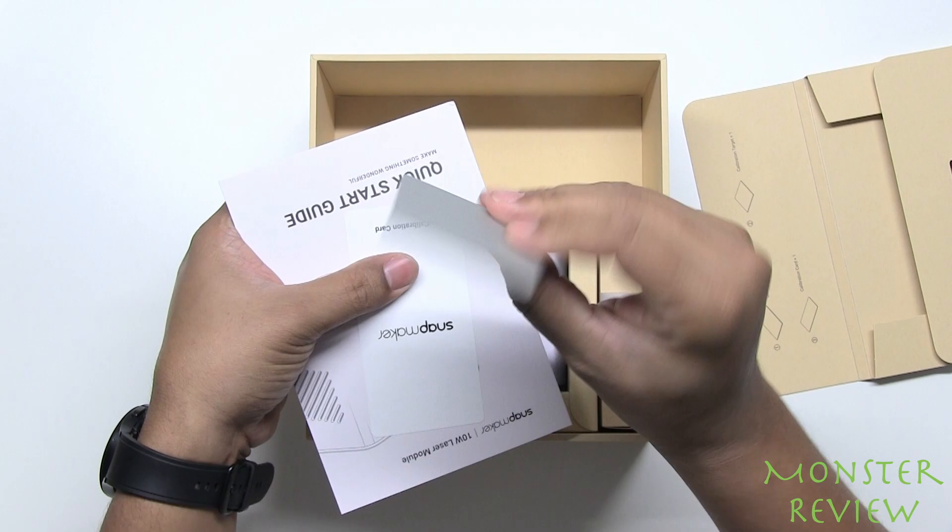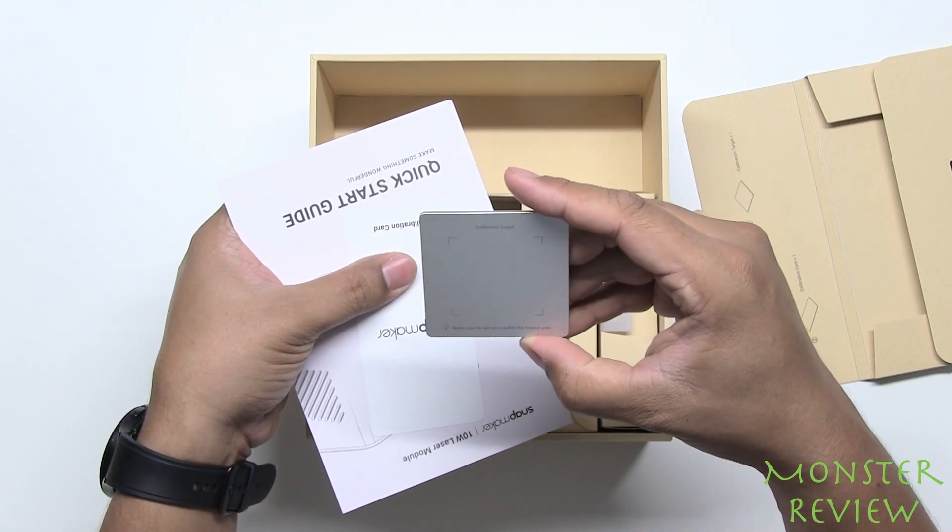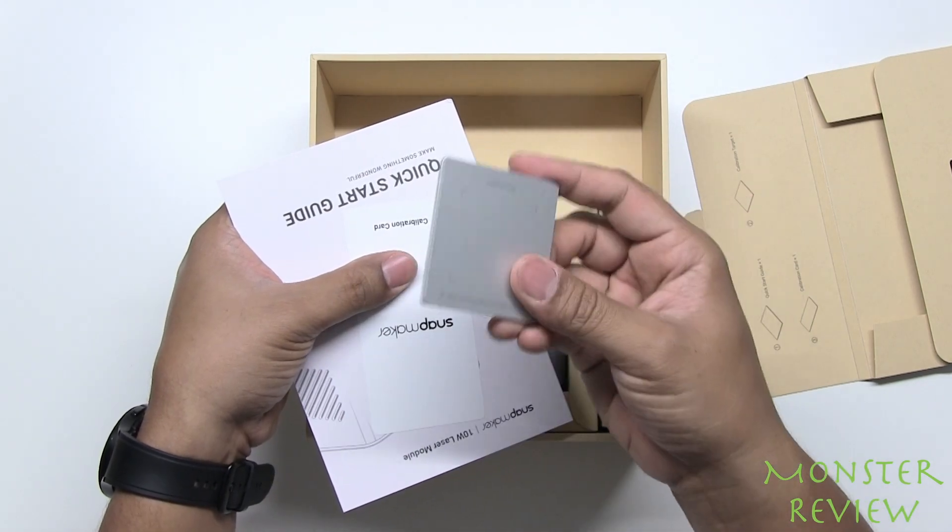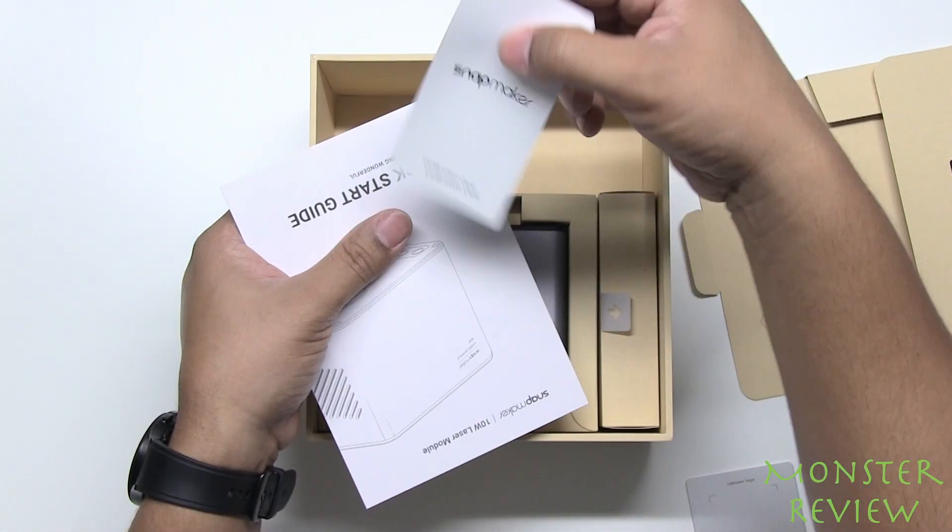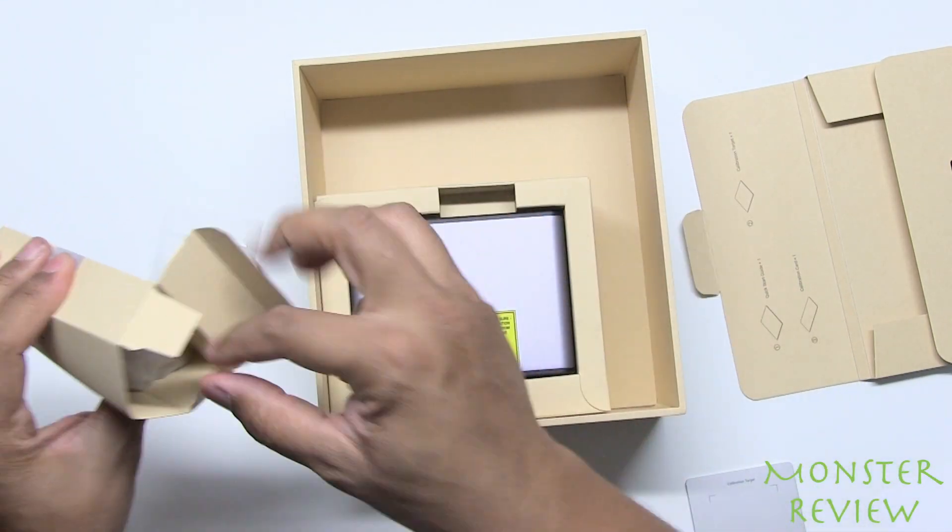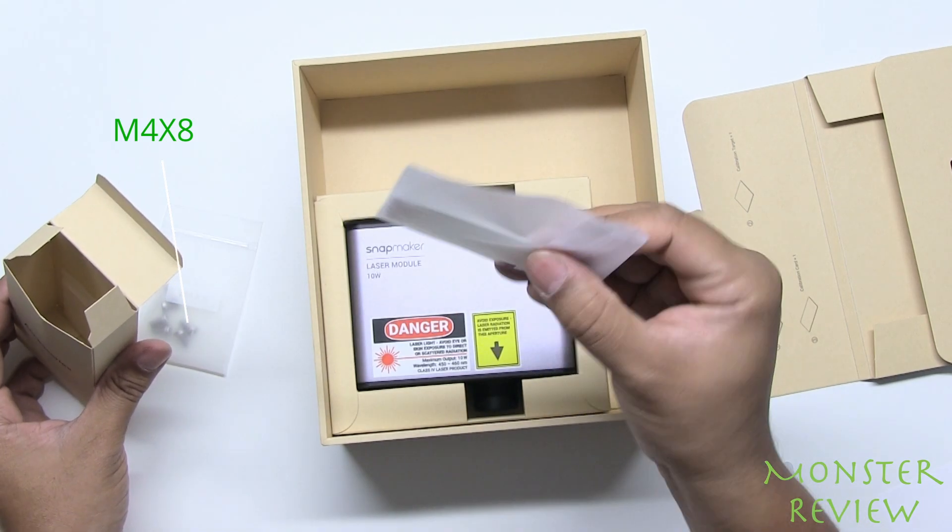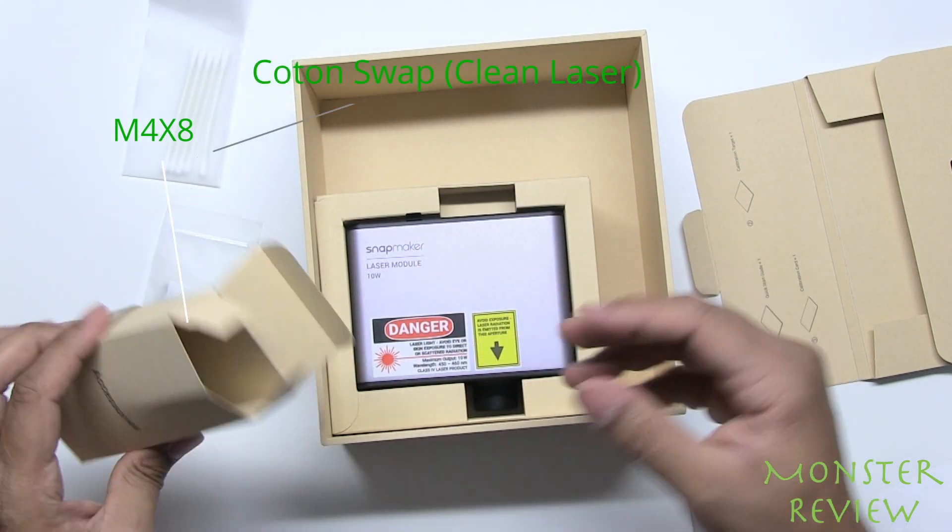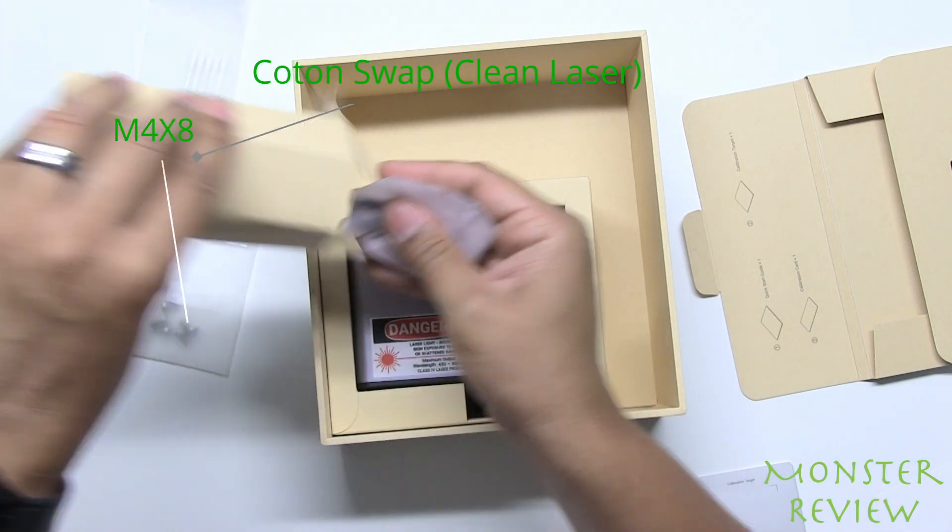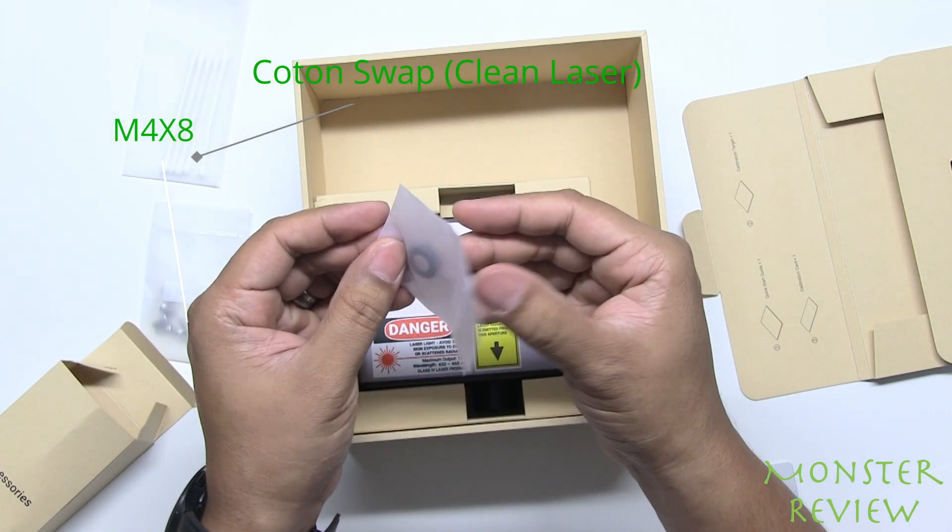We have a calibration target. Make sure the red dot is within the framed area. We have a calibration card, just like the standard laser. So we do have screws and cotton swab. All right, I'm definitely going to have to read the manual on this. Looks like some kind of o-ring.